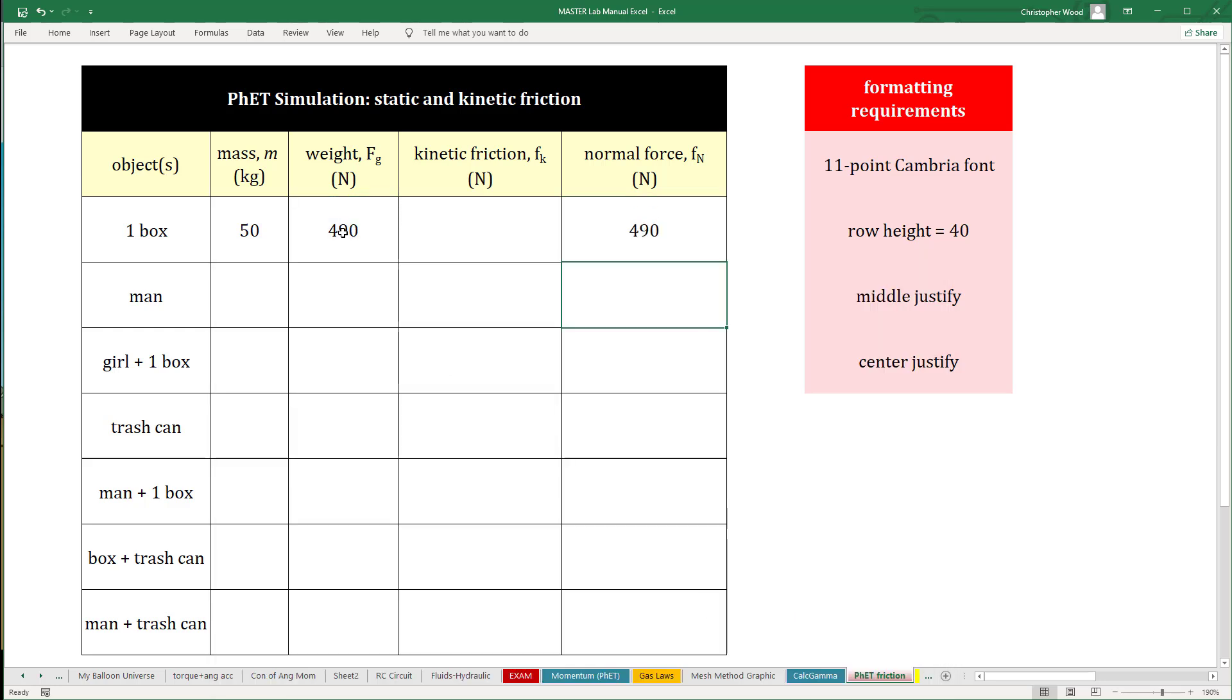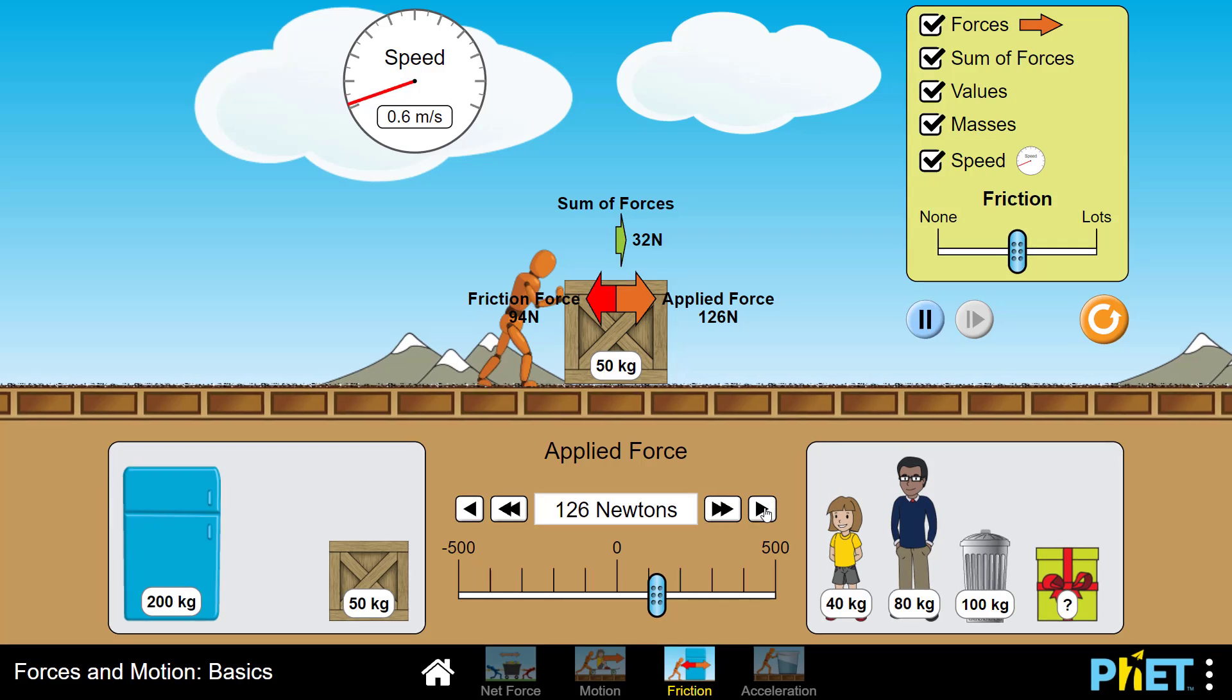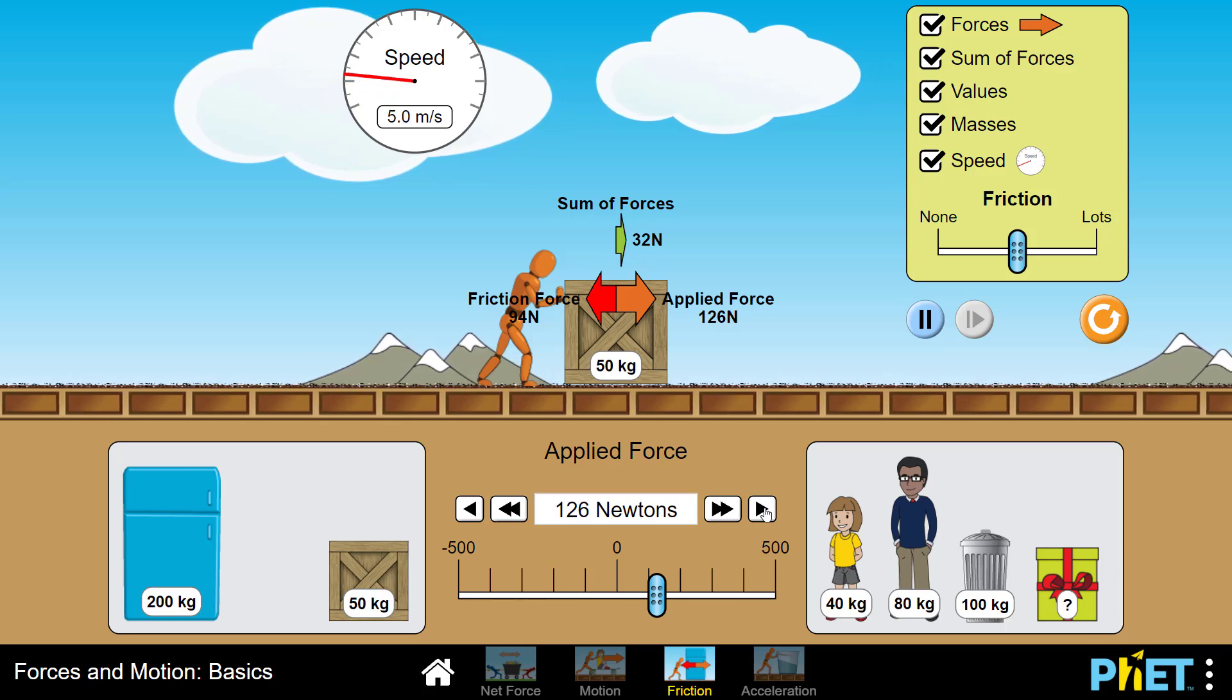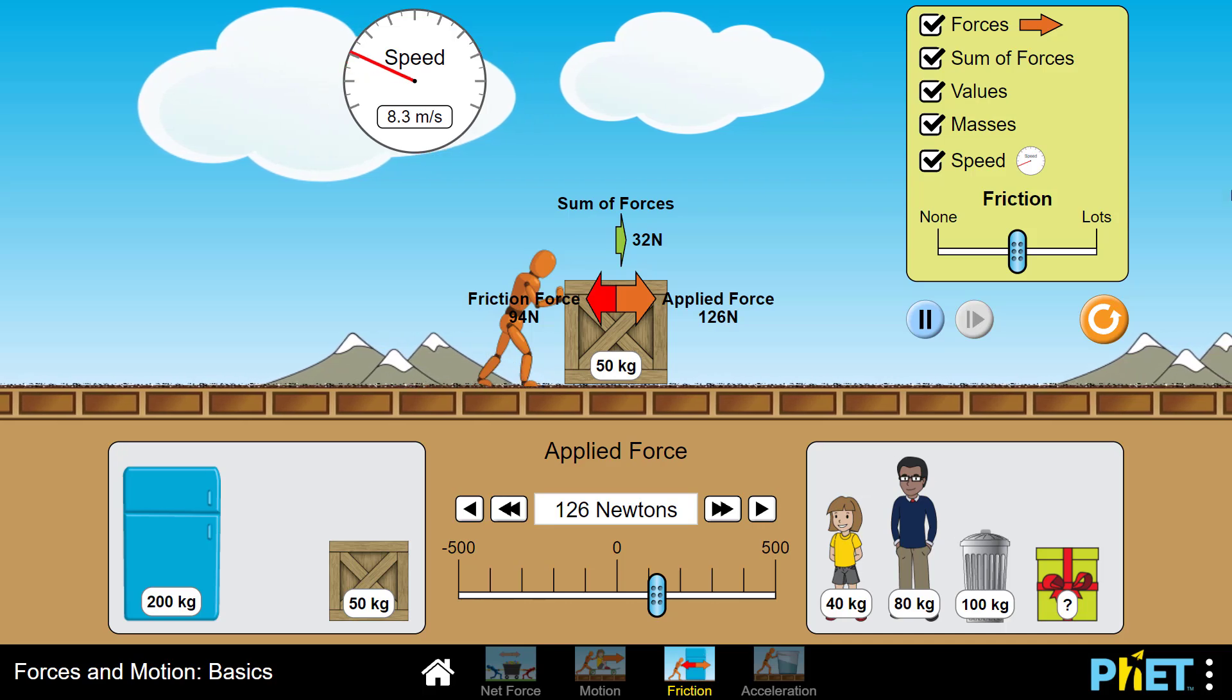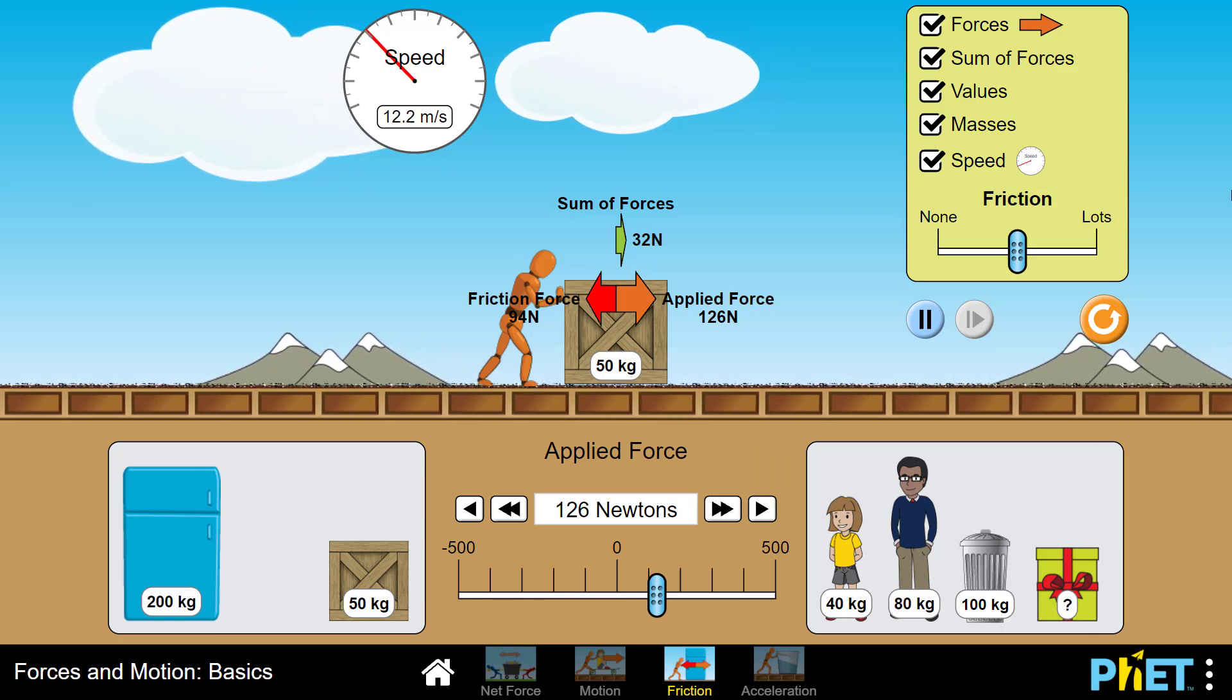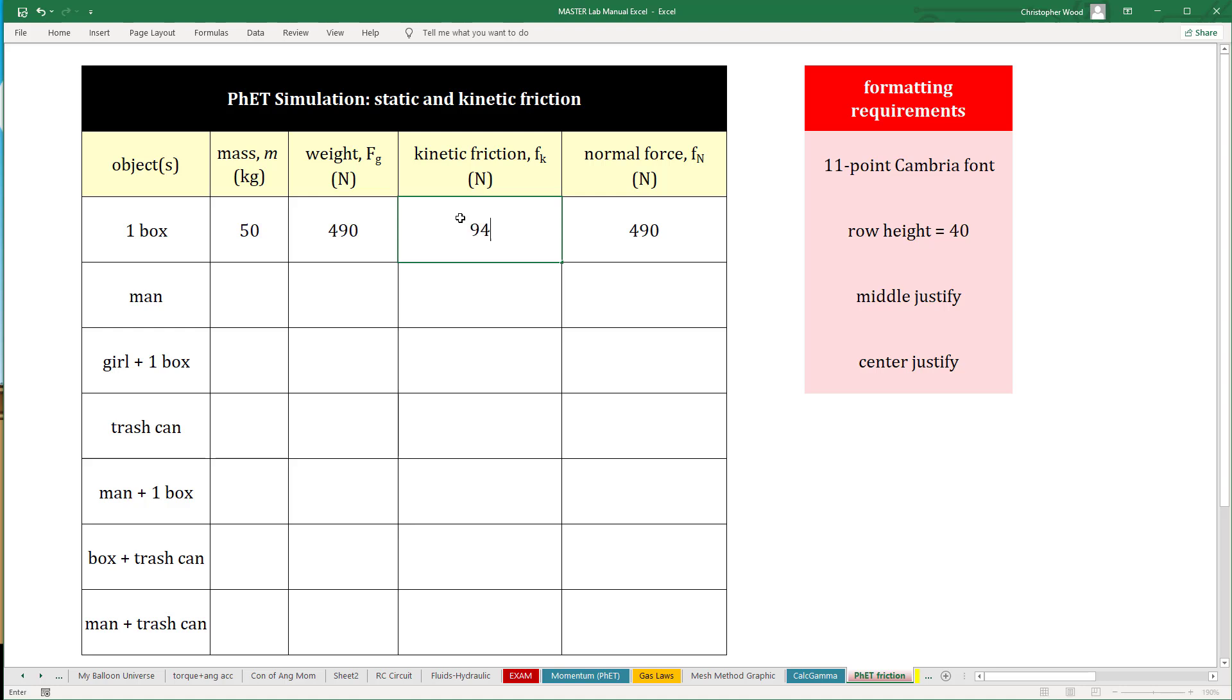For the kinetic friction force, let's go back to the simulation. I reset everything, and once again, I'm applying a 125 Newtons force. The static friction force has grown to 125 Newtons going to the left, and as soon as I increase my applied force from 125 to 126 Newtons, you can see the box starts to move, and my friction force is now kinetic friction, and it's reduced to 94 Newtons going to the left. My applied force is still 126 Newtons, so there is a net force of 32 Newtons in the right direction, which is why I'm accelerating. This is my kinetic friction force that I'm going to enter into my spreadsheet. 94 Newtons. Enter.